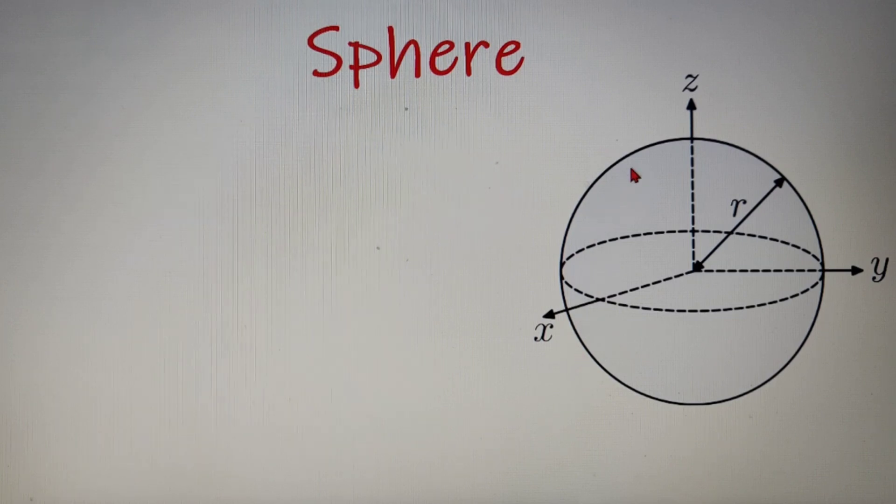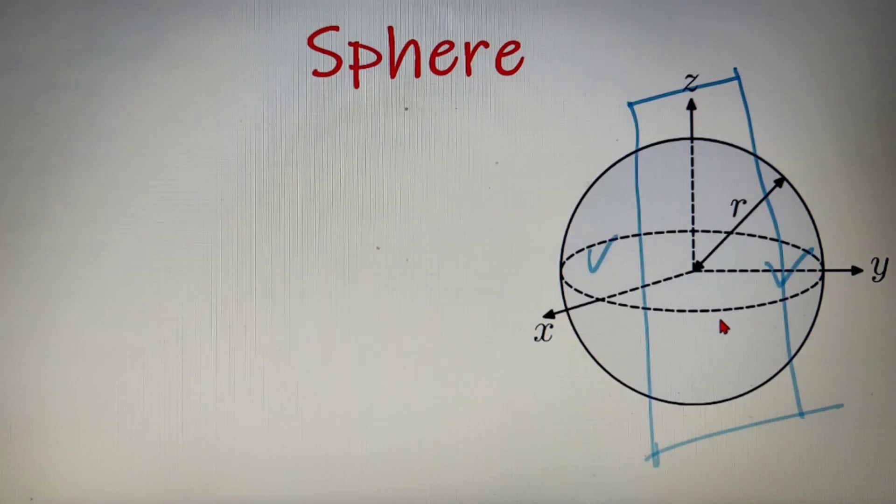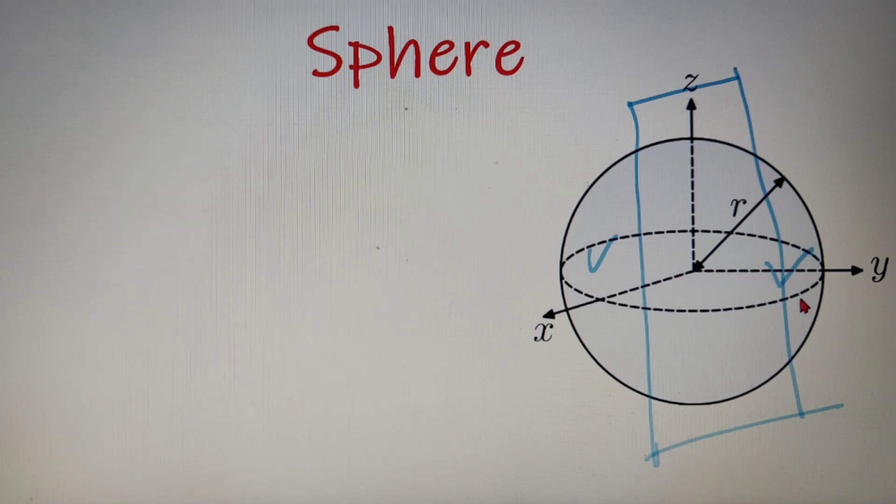Second property is that a sphere has infinite planes of symmetry. Now you can clearly see that if I draw a plane that passes through the center of the sphere, then it will divide the sphere into two equal parts. This is the first part and this is the second part. So I can make infinite number of such planes and that will still divide the sphere into two equal halves. Thus a sphere has infinite number of planes of symmetry.